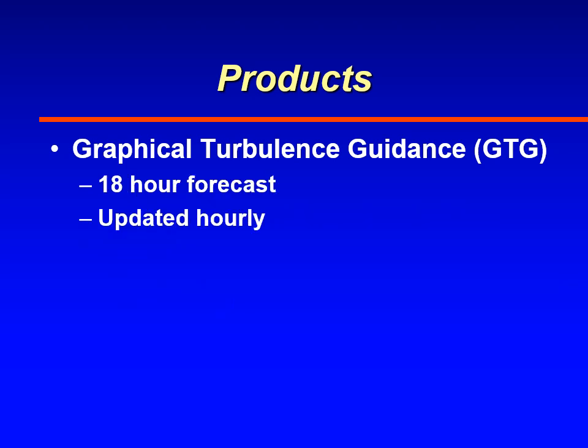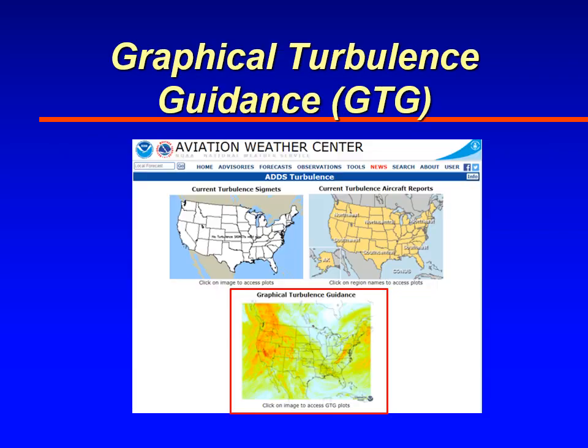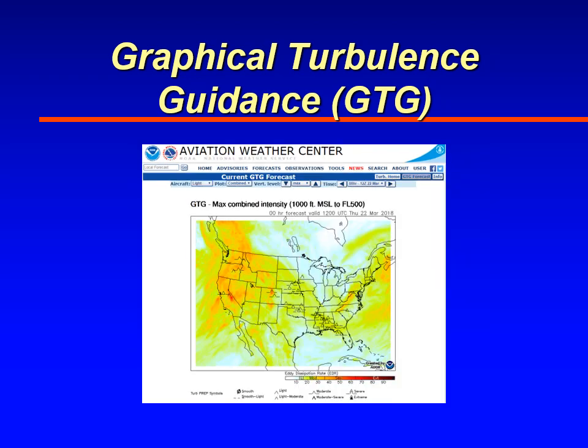The GTG forecasts EDR up to 18 hours into the future, and a forecast is generated every hour, so it is continuously updated. You can look out 18 hours into the future to see what kind of turbulence you can expect along a route of flight. You can view the GTG output at the Aviation Weather Center — go to their turbulence page and click on the bottom image, which will take you to a page that shows the EDR.